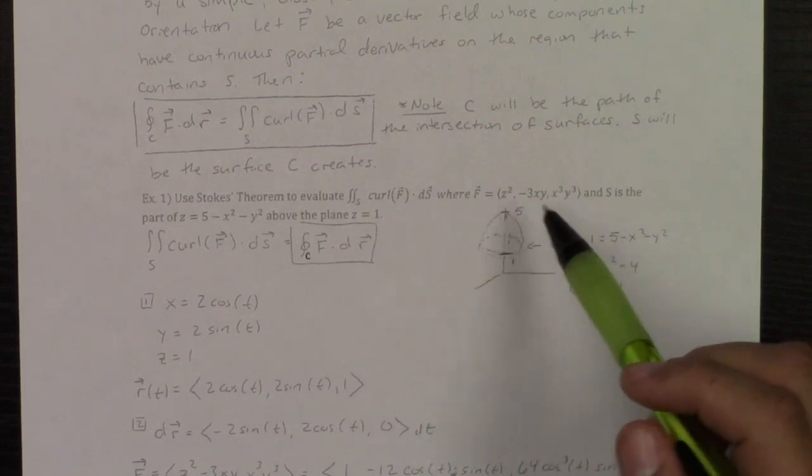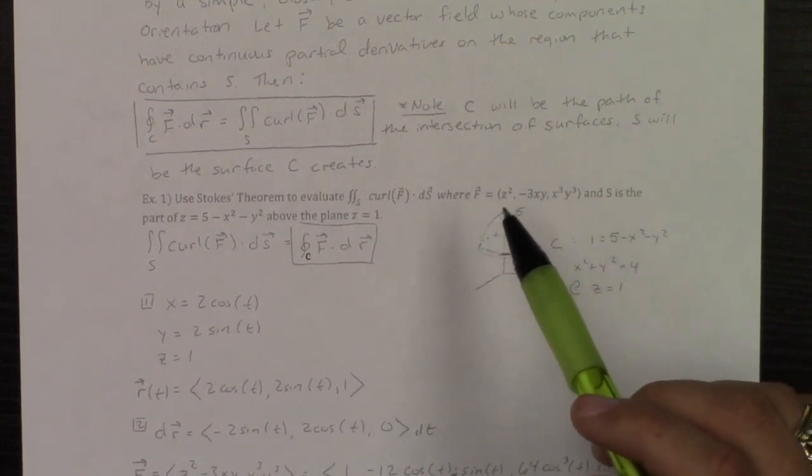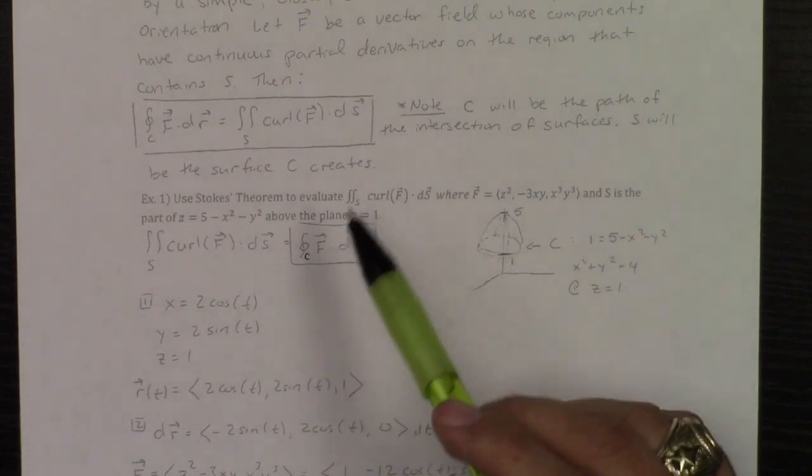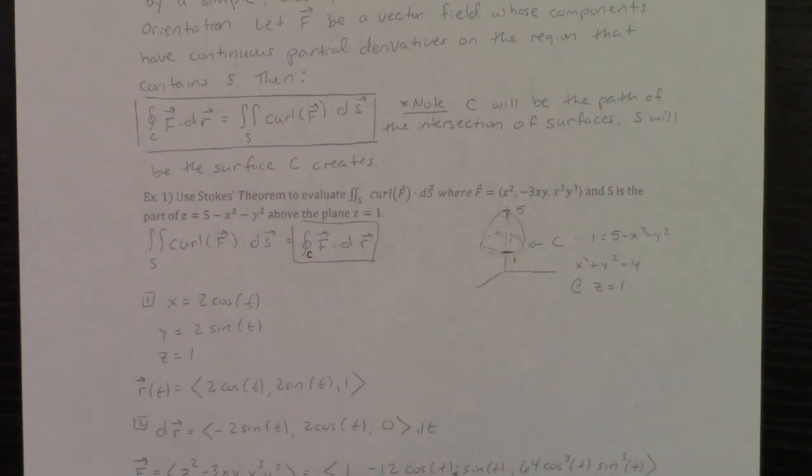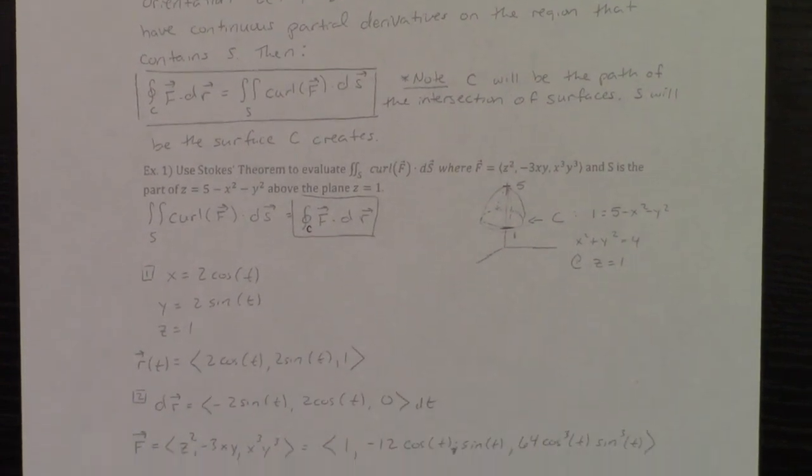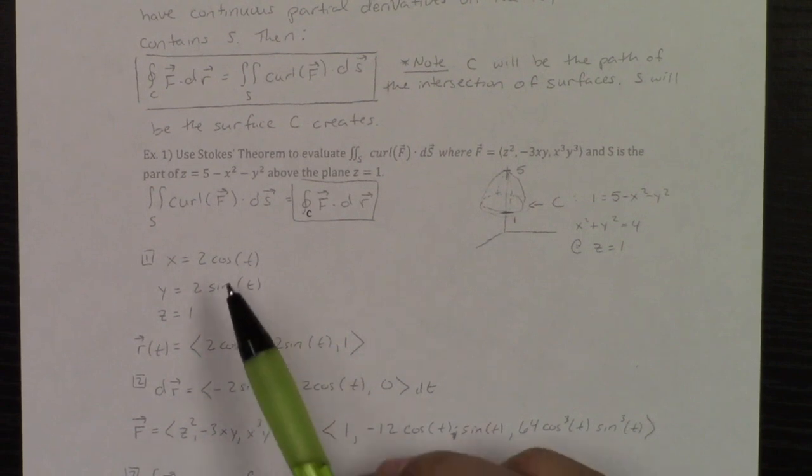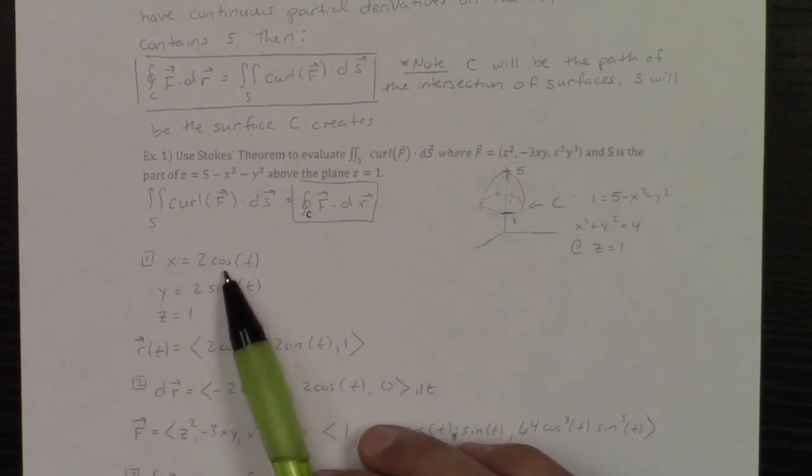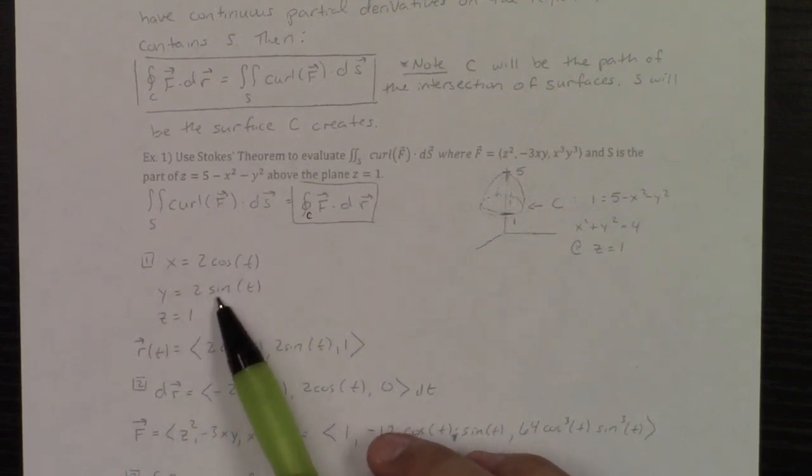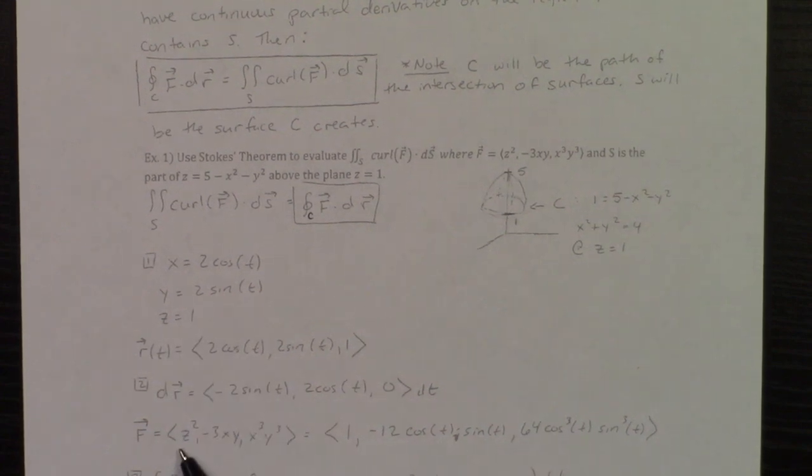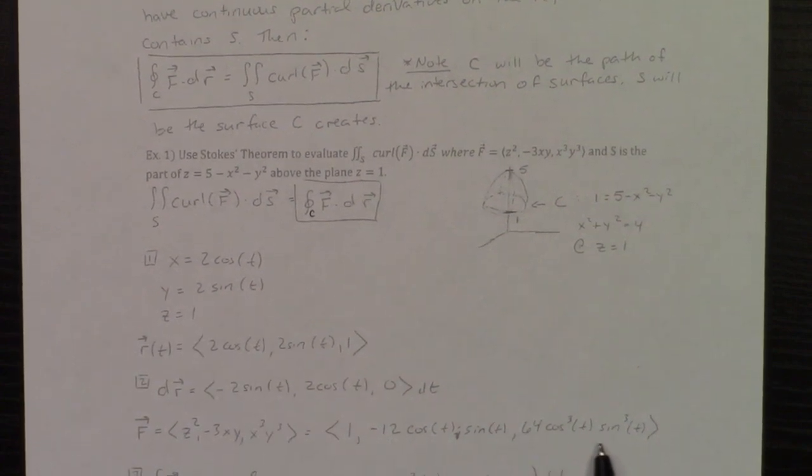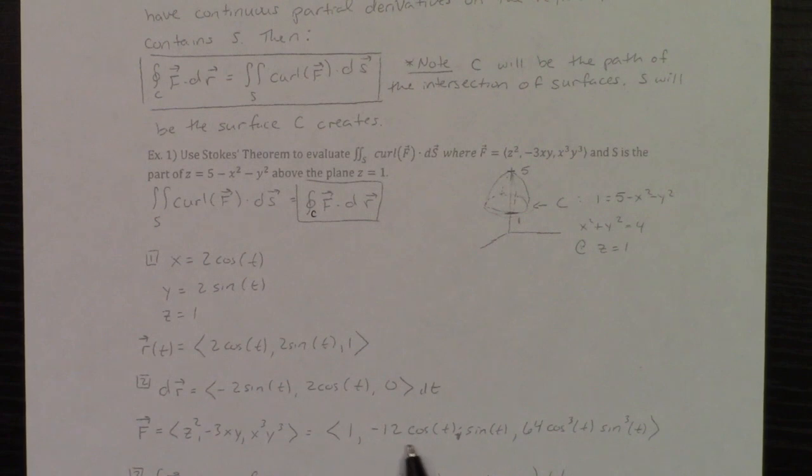Now, I want to do F dotted with dr, but the problem is, look at F. F has X, Y's, and Z's all over the place. My dr only has T's. When I do a line integral, I need to only have T's. So, replace every X with a 2 cosine T, replace every Y with a 2 sine T, and replace every Z with a 1, and then that will get you your F in terms of T.